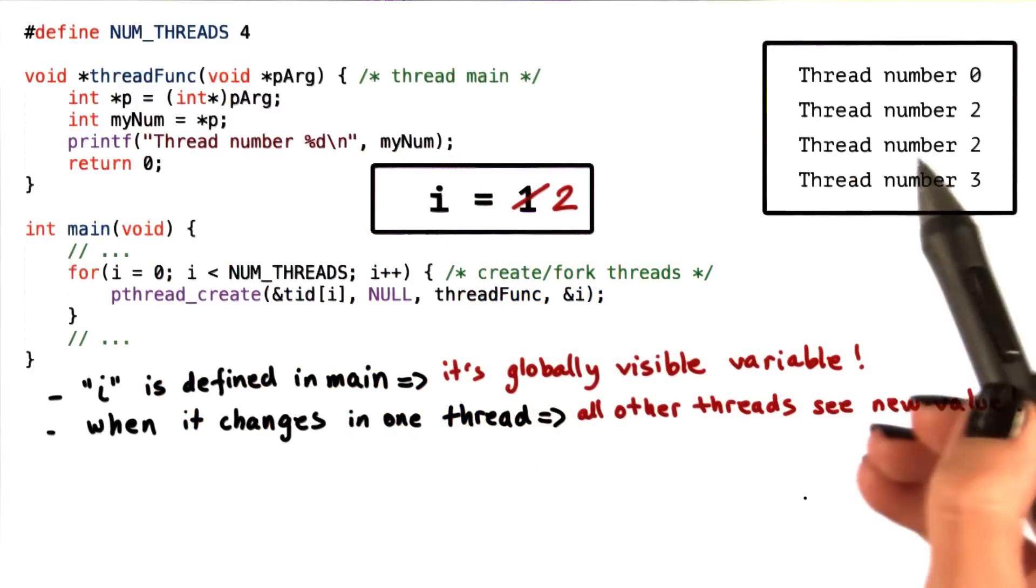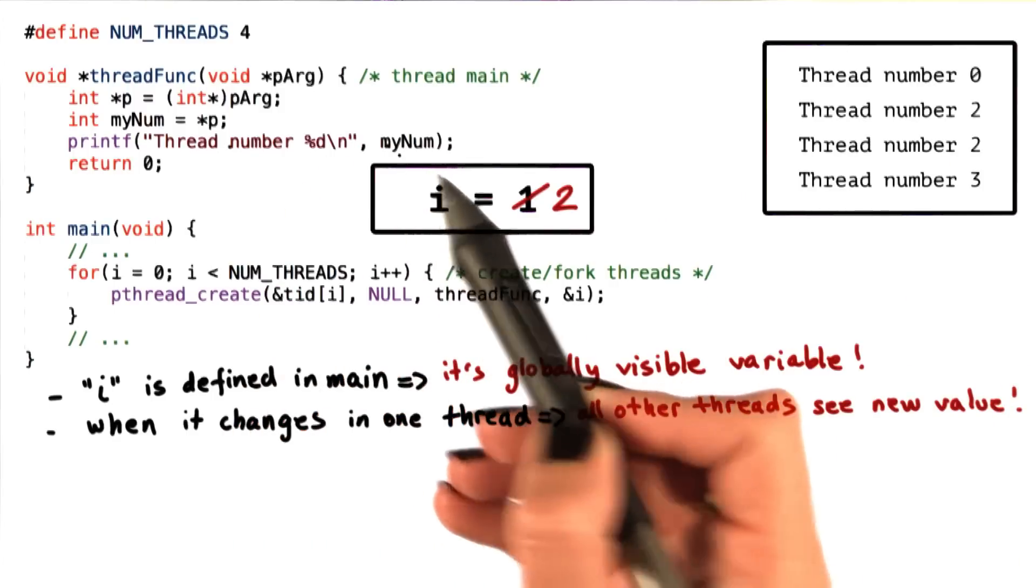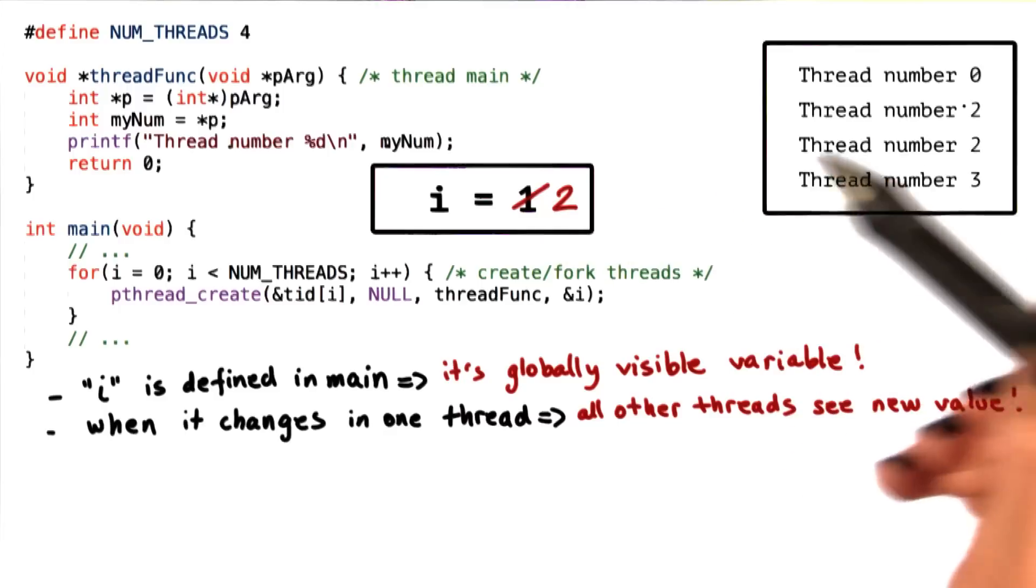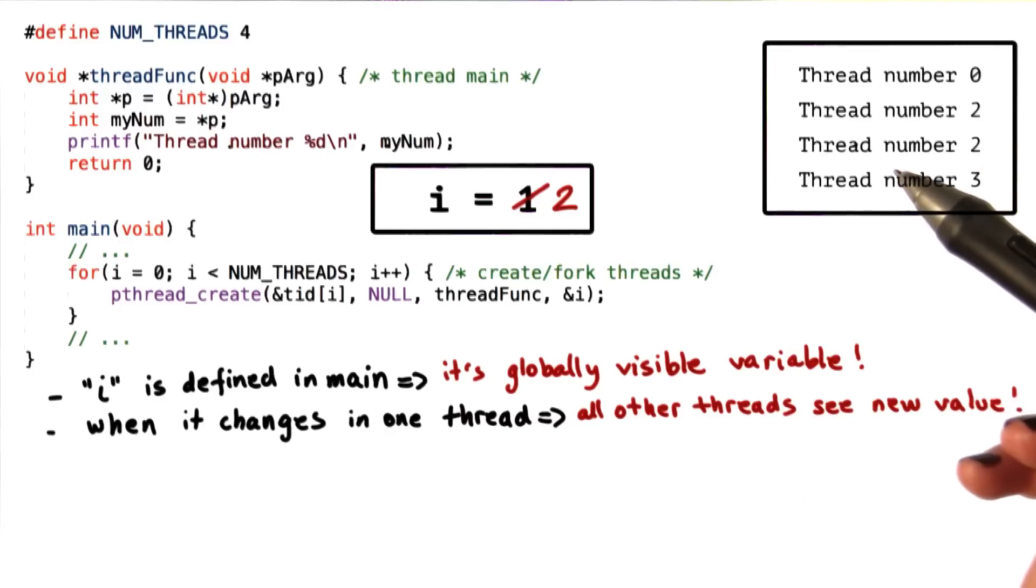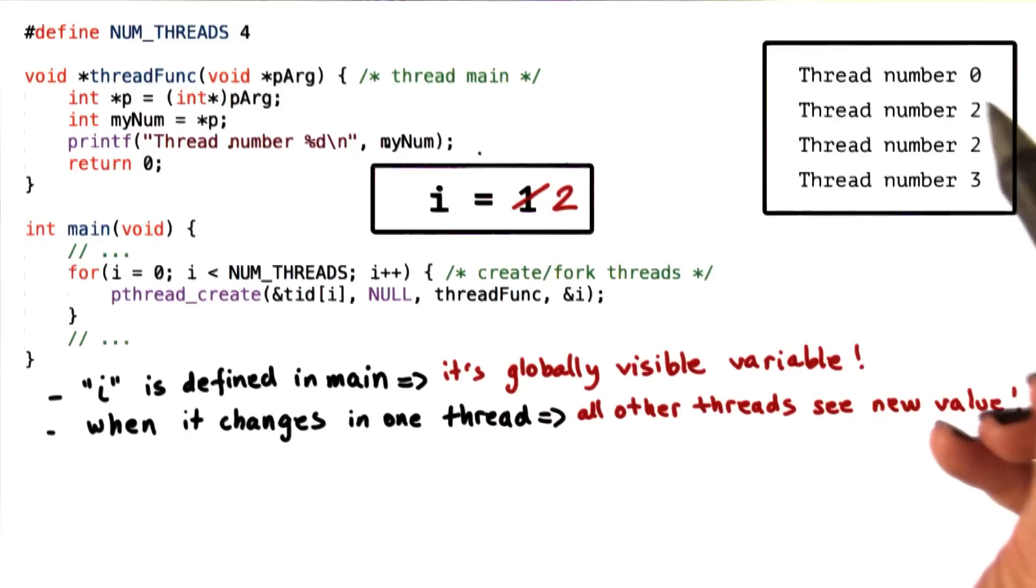So it's not like we lost the printout from that second thread that we were expecting with printout thread number 1. It's just that both the second and the third thread ended up seeing that the value of i is 2, and that's why it ended up printing out thread number 2.